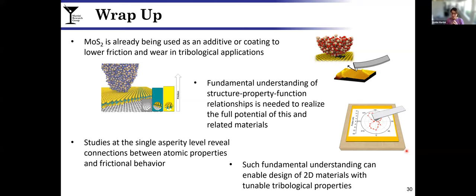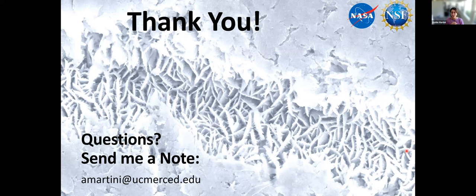Wrapping up, MoS2, which is what I started with, is already being used as an additive, as a coating. It's limited in that it's hard to predict. So from a design perspective, it's hard to predict how it's going to perform under different conditions. I propose that a fundamental approach to understanding the connections between ground truth like lattice constant and friction is really needed to perform the baseline to ultimately get us to where we need to be for design guidelines. This is done using single asperity studies as I showed you with AFM and complementary molecular dynamics. Ultimately, I hope that these kinds of studies can provide the fundamental understanding that we need to design 2D materials with tunable or optimized properties.